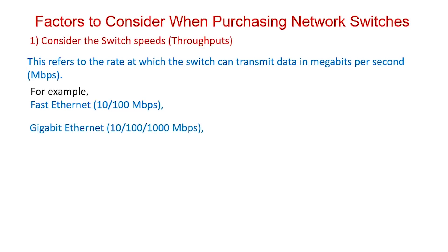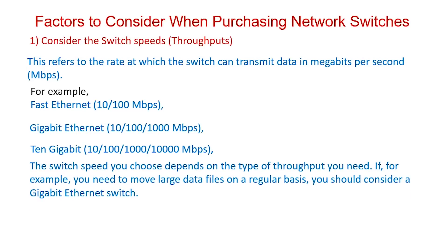A switch can also have a speed of 10–100–1000 Mbps, meaning it can transmit data up to 1000 megabits per second, which equals 1 gigabit per second. These are known as Gigabit Ethernet switches and are suitable for a medium-sized home office network. A switch can also have a speed of 10–100–1000–10,000 Mbps, meaning it can transmit data up to 10 gigabits per second — suitable for a very large, high-speed network. The switch speed you choose depends on the throughput you need; if you regularly move large data files, you should consider a Gigabit Ethernet switch.